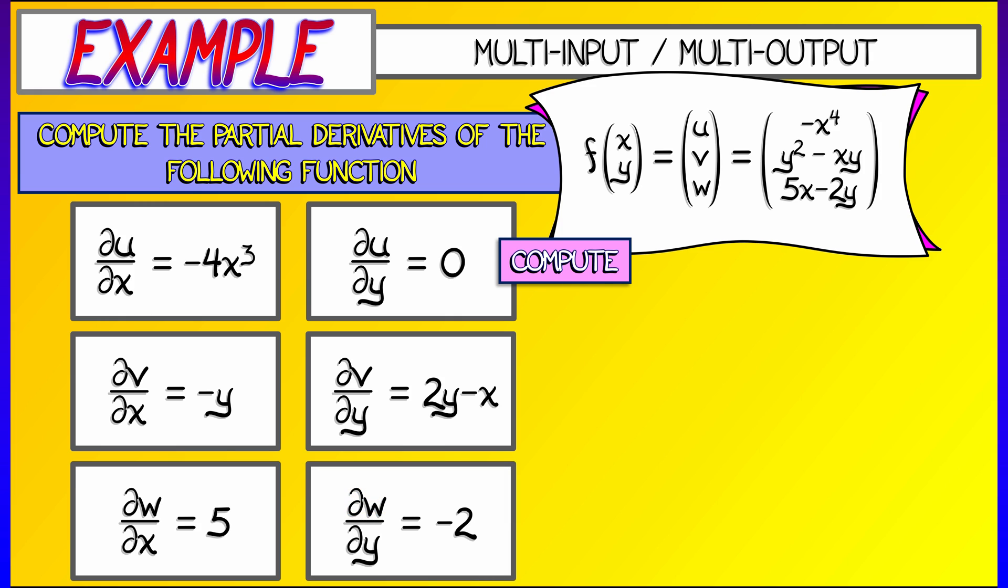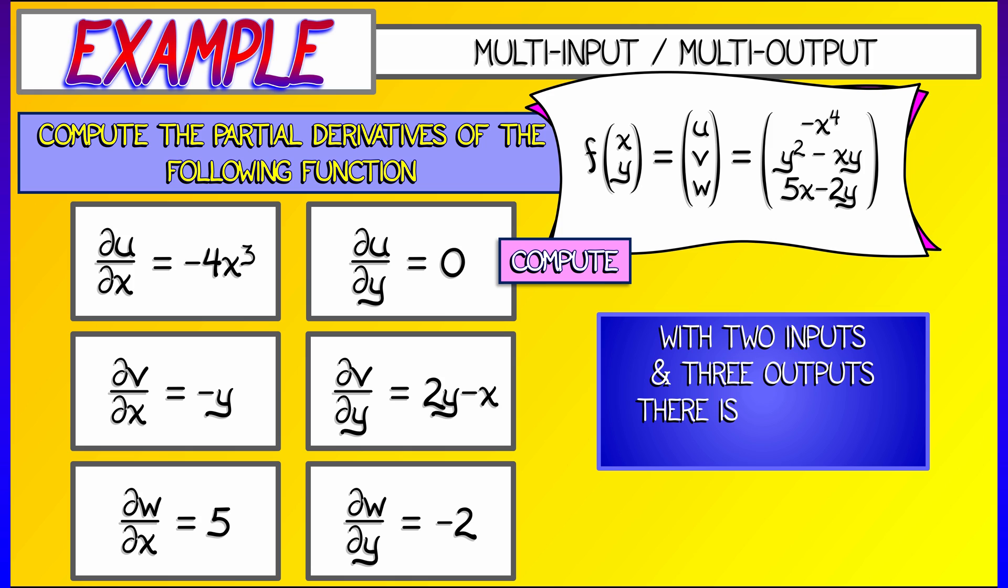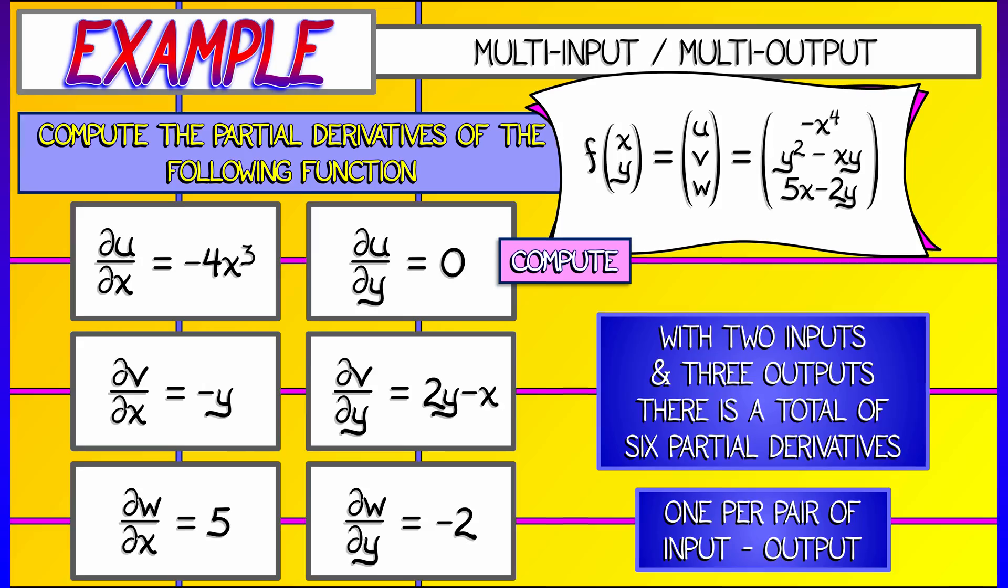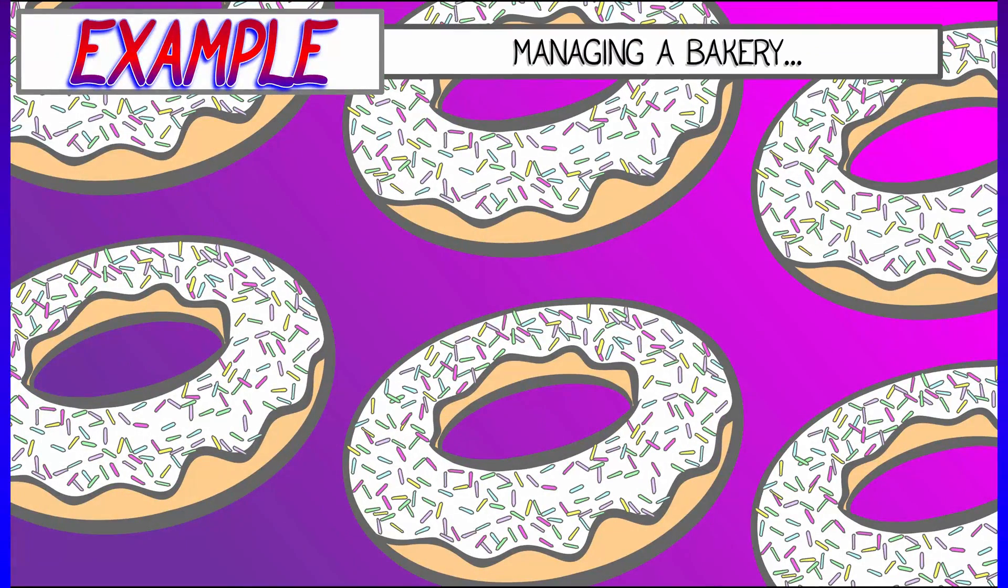Now notice, 2 inputs, 3 outputs. There's a total of 6 partial derivatives, that is 2 times 3. One for every input-output pair. Okay, that wasn't so bad, that was pretty doable.